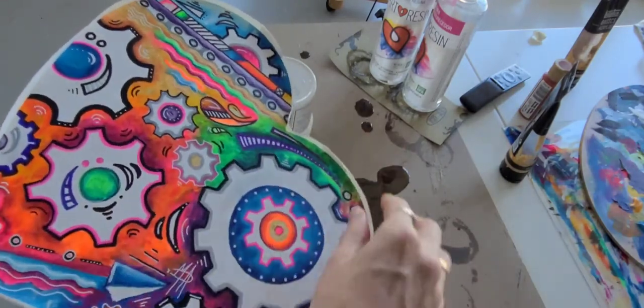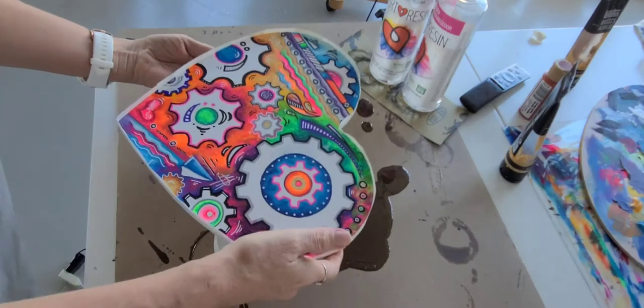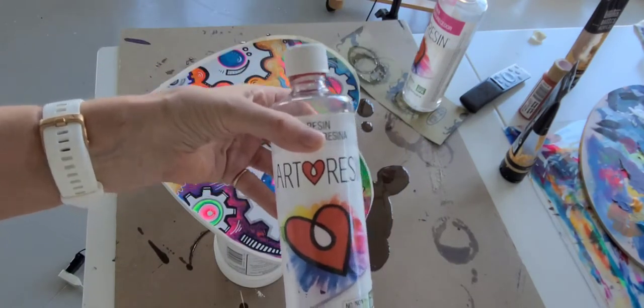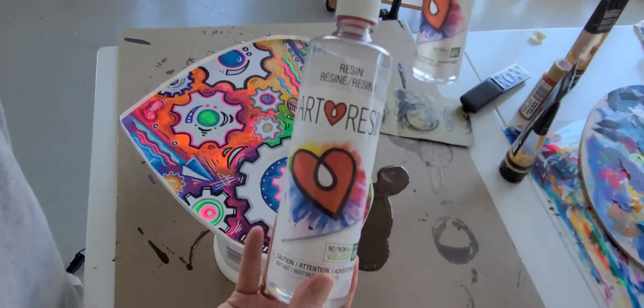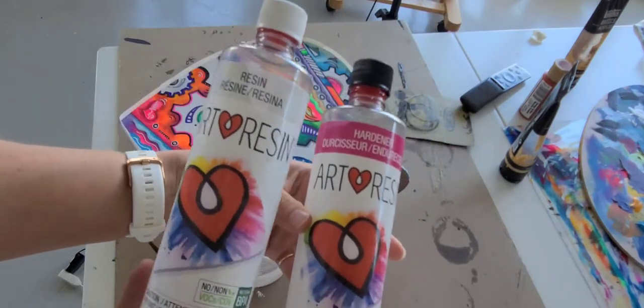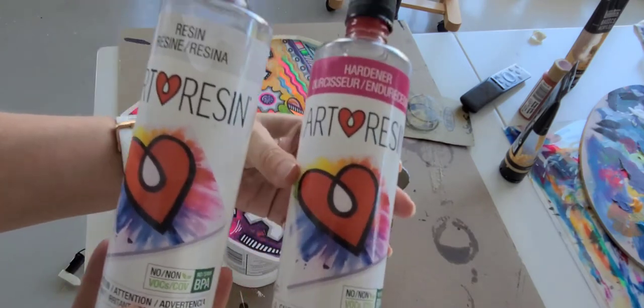The next step will be to mix the resin. I use Art Resin—it just seems to be the best. It also self-levels. We have the resin and then the hardener.